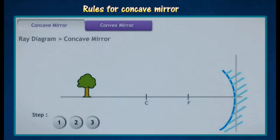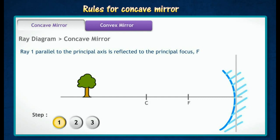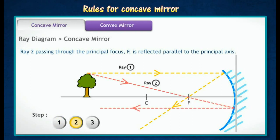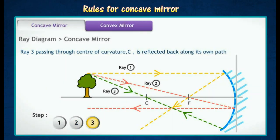The following animation shows the use of a ray diagram to determine the position of an image formed by a concave mirror. Ray 1 parallel to the principal axis is reflected to the principal focus F. Ray 2 passing through the principal focus F is reflected parallel to the principal axis. Ray 3 passing through center of curvature C is reflected back along its own path.